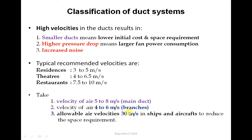For designing main ducts — which branch from AC equipment to the conditioned space — if velocity data is not available, you can take 5 to 8 m per second for the main duct and 4 to 6 m per second for branch ducts. The main duct near the AC equipment should have higher velocity than branch ducts. For ships and aircraft where space is critical, allowable air velocity is nearly 30 m per second.